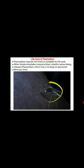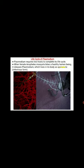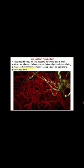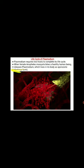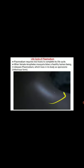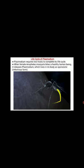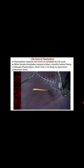It requires the mosquito for sexual reproduction and man for asexual reproduction. When a female Anopheles mosquito bites a healthy human being, it releases Plasmodium — the parasite that causes malaria — which lives in the body as a sporozoite, the infectious form. The mosquito sucks blood from the human and simultaneously releases saliva into the body, and during that process, the malaria parasites present in the salivary gland of the mosquito enter the body.